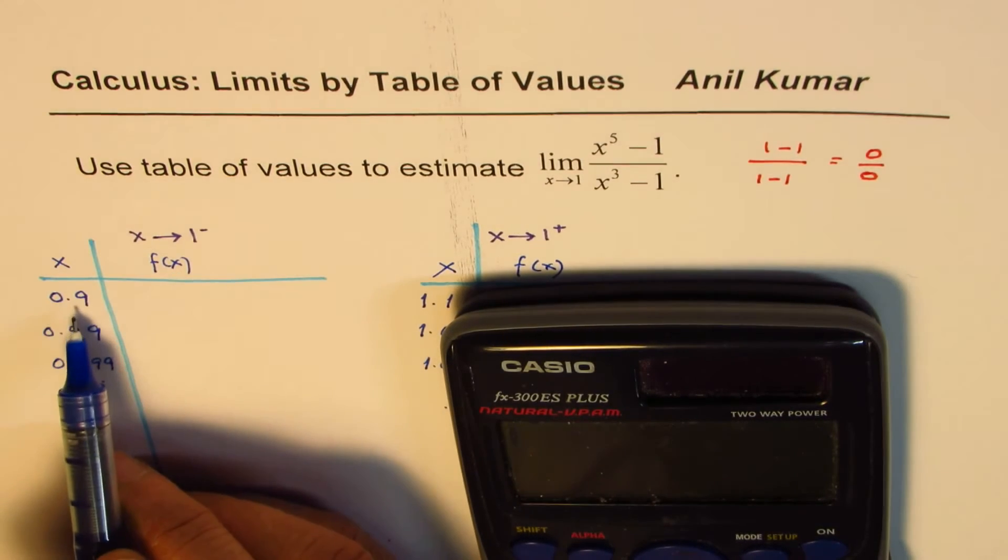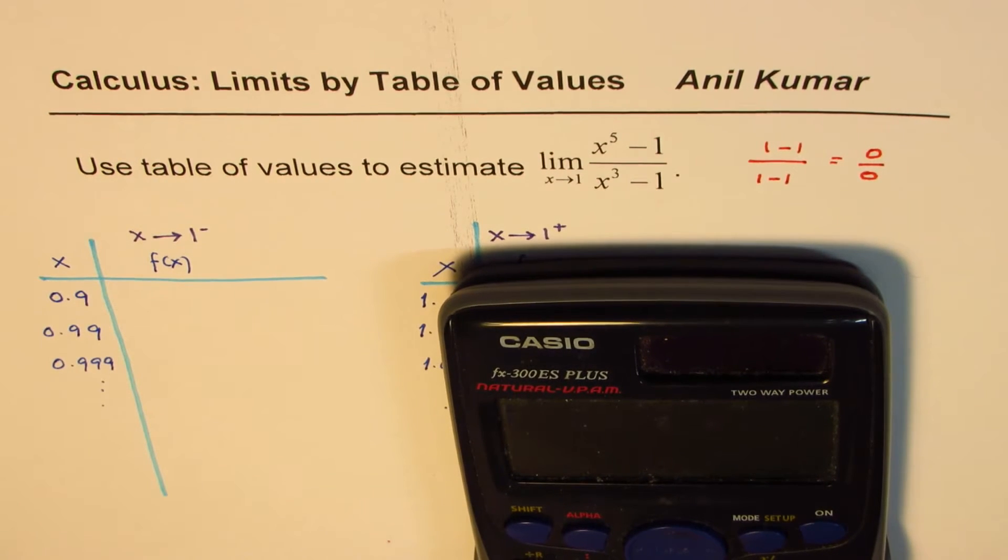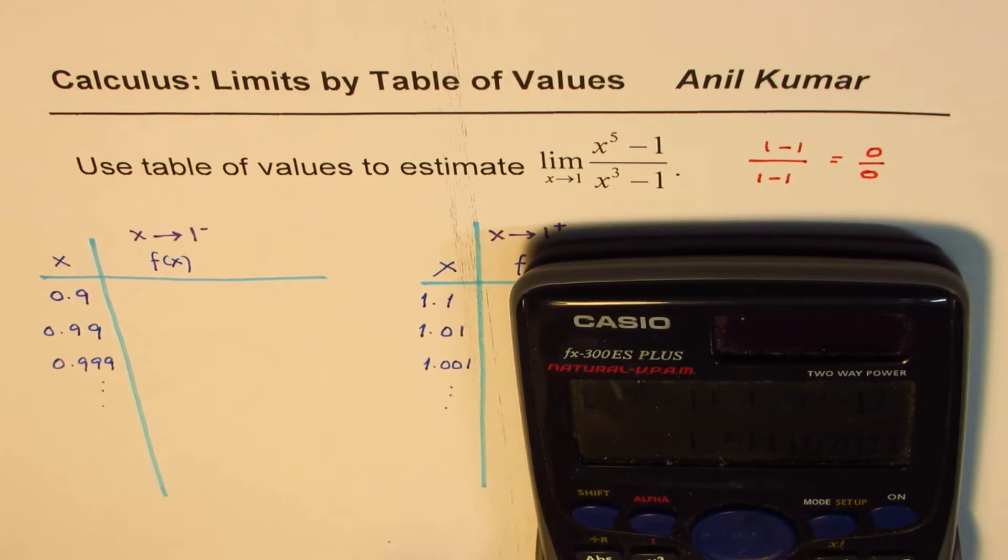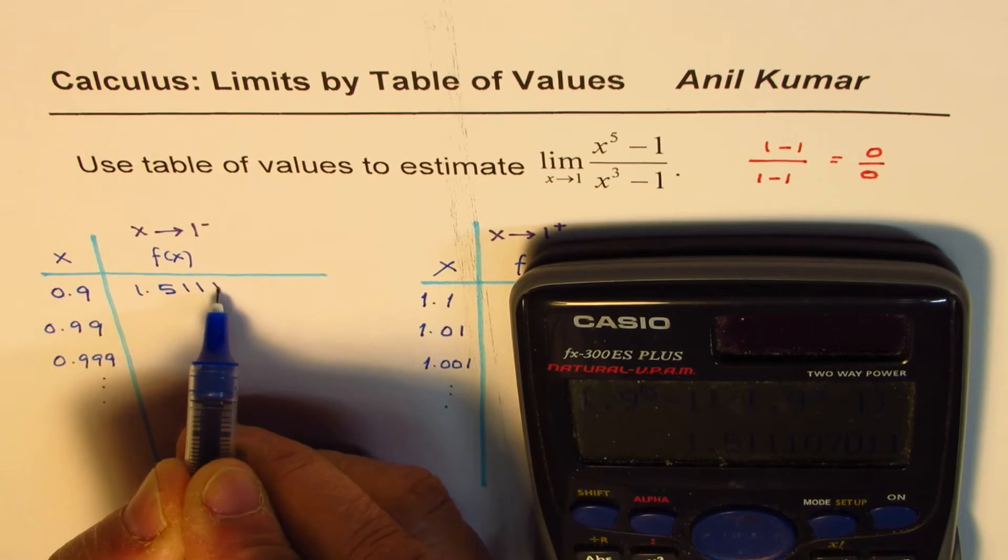Let's take one. So we'll substitute these values in the expression and write down the result. That's so simple. So we have in the numerator 0.9 and that to the power of 5. So this is to the power of 5. And then we take minus 1 bracket close divided by, within bracket, 0.9 cube minus 1 bracket close, equal to. So you get a value, which is 1.5111.